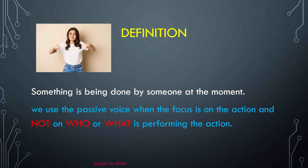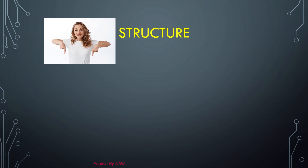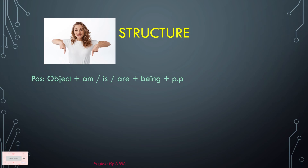Just like other passive tenses, present continuous passive is no exception — in this tense we don't talk about the subject. The structure is really simple: all you have to do is use the object with am/is/are, followed by 'being' and the past participle. Instead of a subject, the object is what you use.